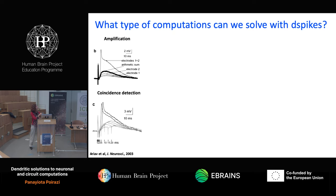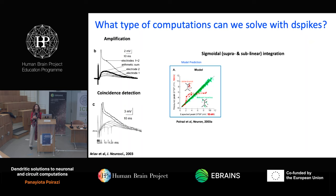This amplifying signal — the dendritic spike — depends on the timing of the two inputs. Only if both inputs are activated together do you get a very strong nonlinear response. If you separate them in time, then you lose this amplification. This feature can be used to tell the neuron that it is now receiving coincident inputs. That's another type of computation that can be supported by dendrites.